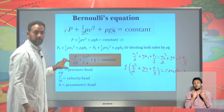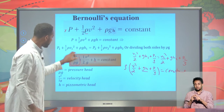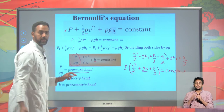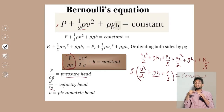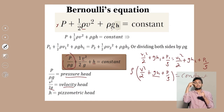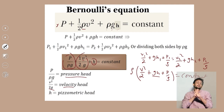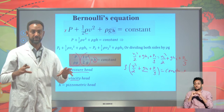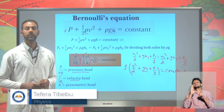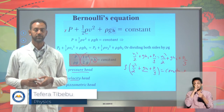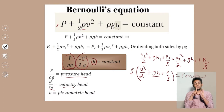The pressure head, velocity head, and piezometric head remain constant at every section of the conduit or pipe. This is Bernoulli's principle — it is derived from the law of conservation of energy. It is not a new law, but a rearrangement of equations.